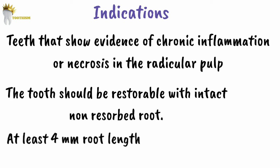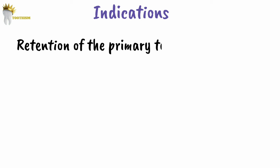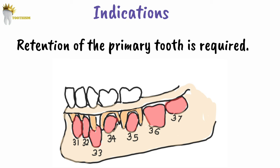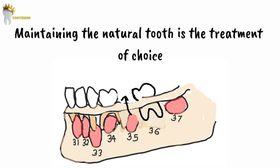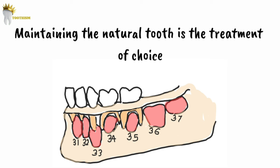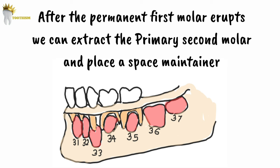The most important indication is when retention of the primary tooth is required. For example, pulp destruction of a primary second molar that occurs before the first permanent molar erupts. If we prematurely extract the primary second molar without a space maintainer, it results in mesial eruption of the first permanent molar and loss of space for the second premolar. Although a distal shoe space maintainer can be used, maintaining the natural tooth is the treatment of choice. A pulpectomy in a primary second molar is preferable even if that tooth is maintained only until the first permanent molar has adequately erupted, as it books the space for the second premolar. After the first molar has erupted in its correct place, we can then extract the primary second molar if required and place a space maintainer.